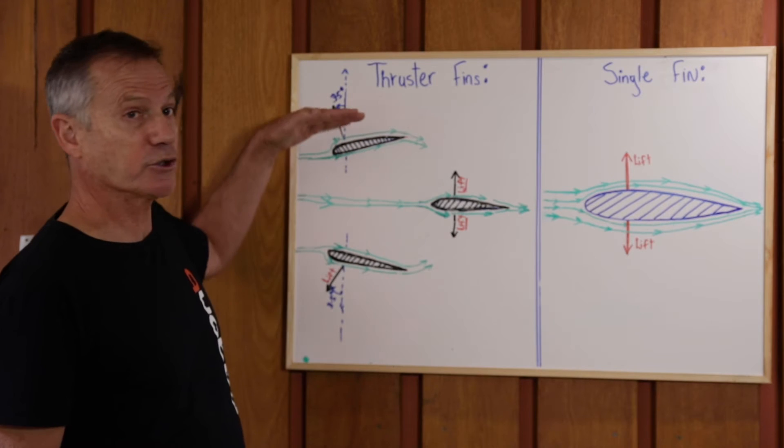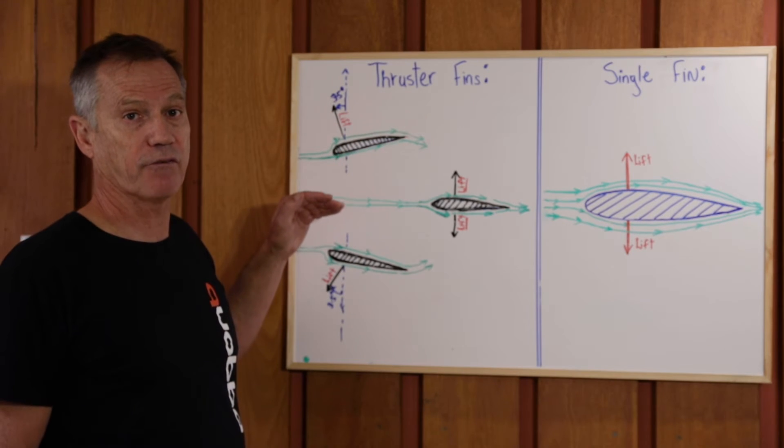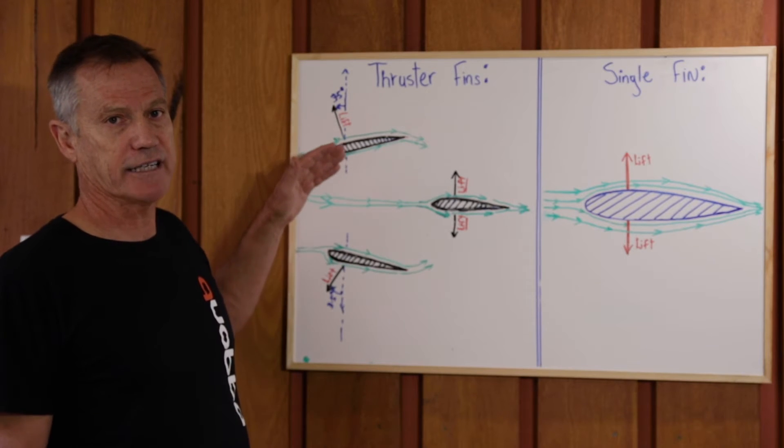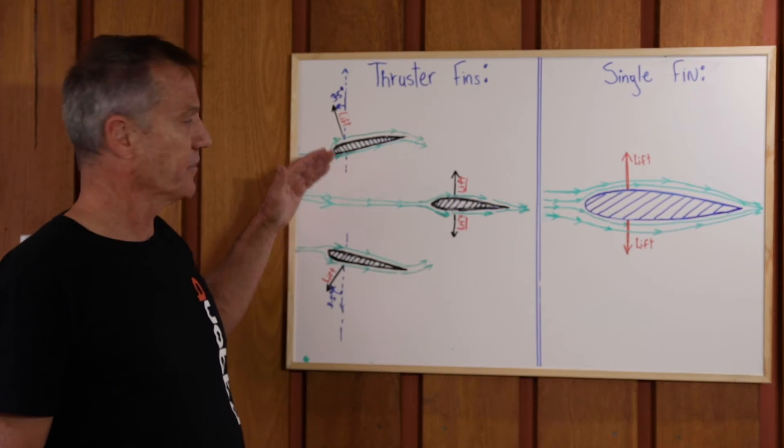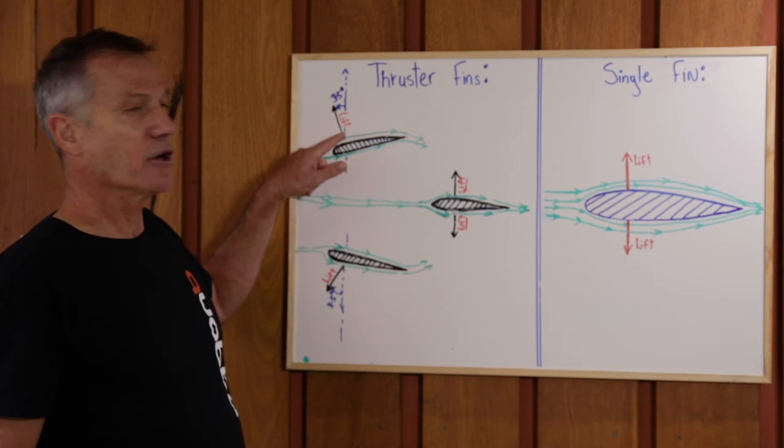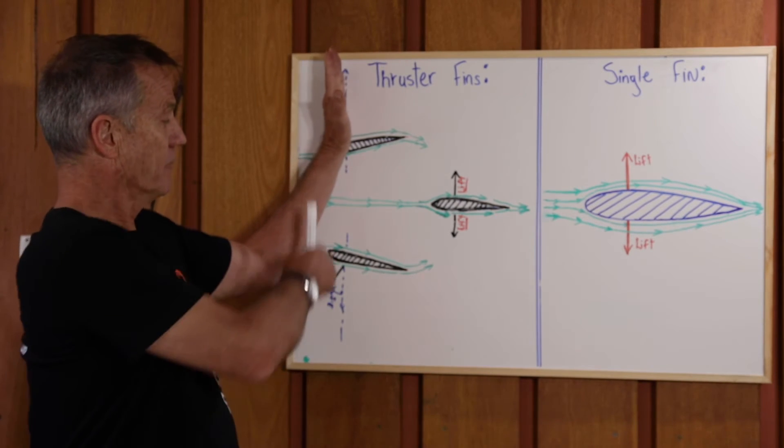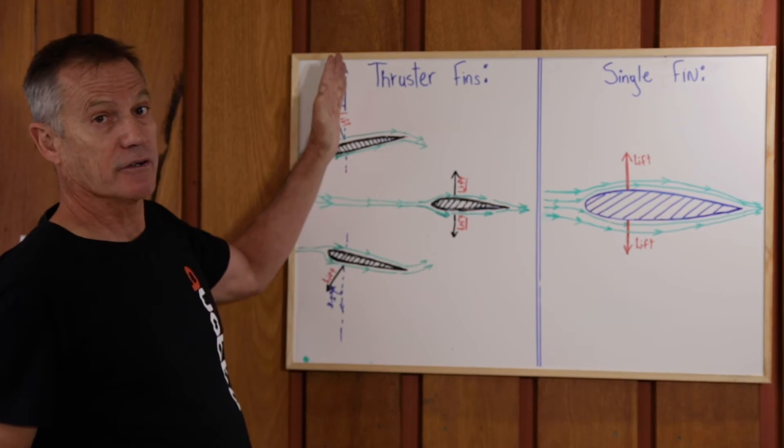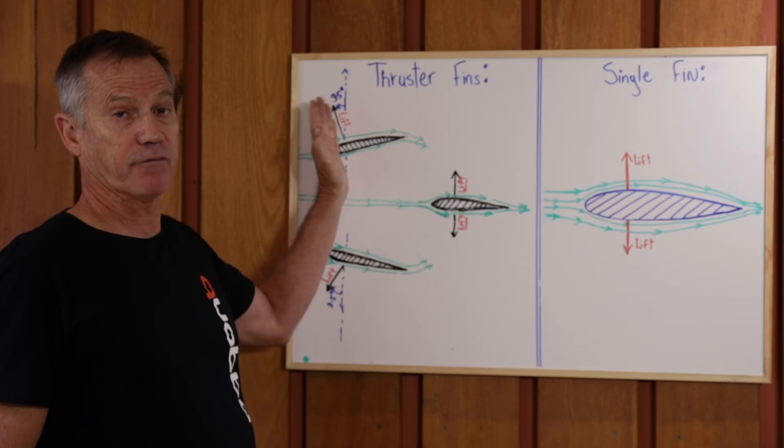But by toeing in or turning in the nose of the fin—the leading edge of the fin—say about three and a half degrees, by turning it into the board, it was called toe-in. What he did was the lift moved from being 180 degrees to each other to forward of that, forward of center.